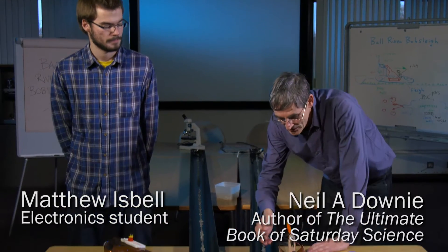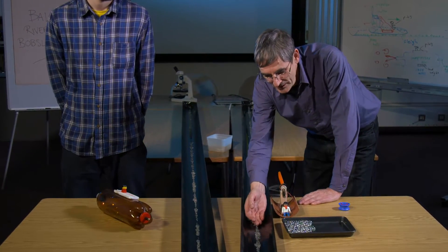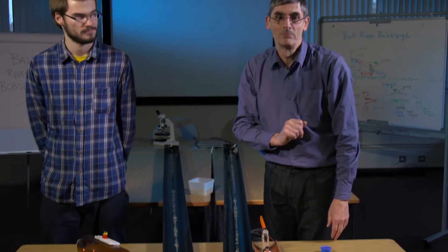This is the Bull River Bobsleigh. So what we've got here is a track which we've put a few balls in the bottom, and these are going to provide a ball bearing effect.